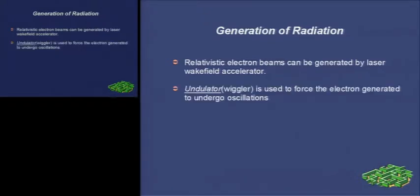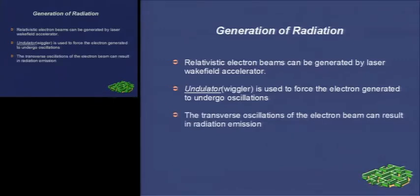Then, an undulator is used to force the electron generated to undergo oscillations. The transverse oscillation of the electron beam results in radiation emission at double Doppler upshifted photon energy extending to the hard x-ray or gamma ray range. This kind of radiation produced in an undulator is very intense and concentrated in a narrow energy band in the spectrum.